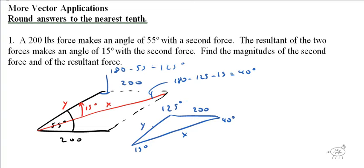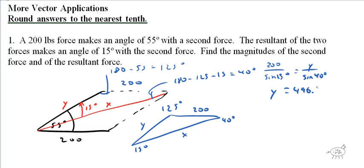We're going to use law of sines — it makes sense because we have an opposite angle. I have that 15 degrees and that 200. So: 200 over sine of 15 degrees equals Y over sine of 40 degrees. Cross-multiplying and solving, I get Y equals 496.7 pounds. This is the second force.